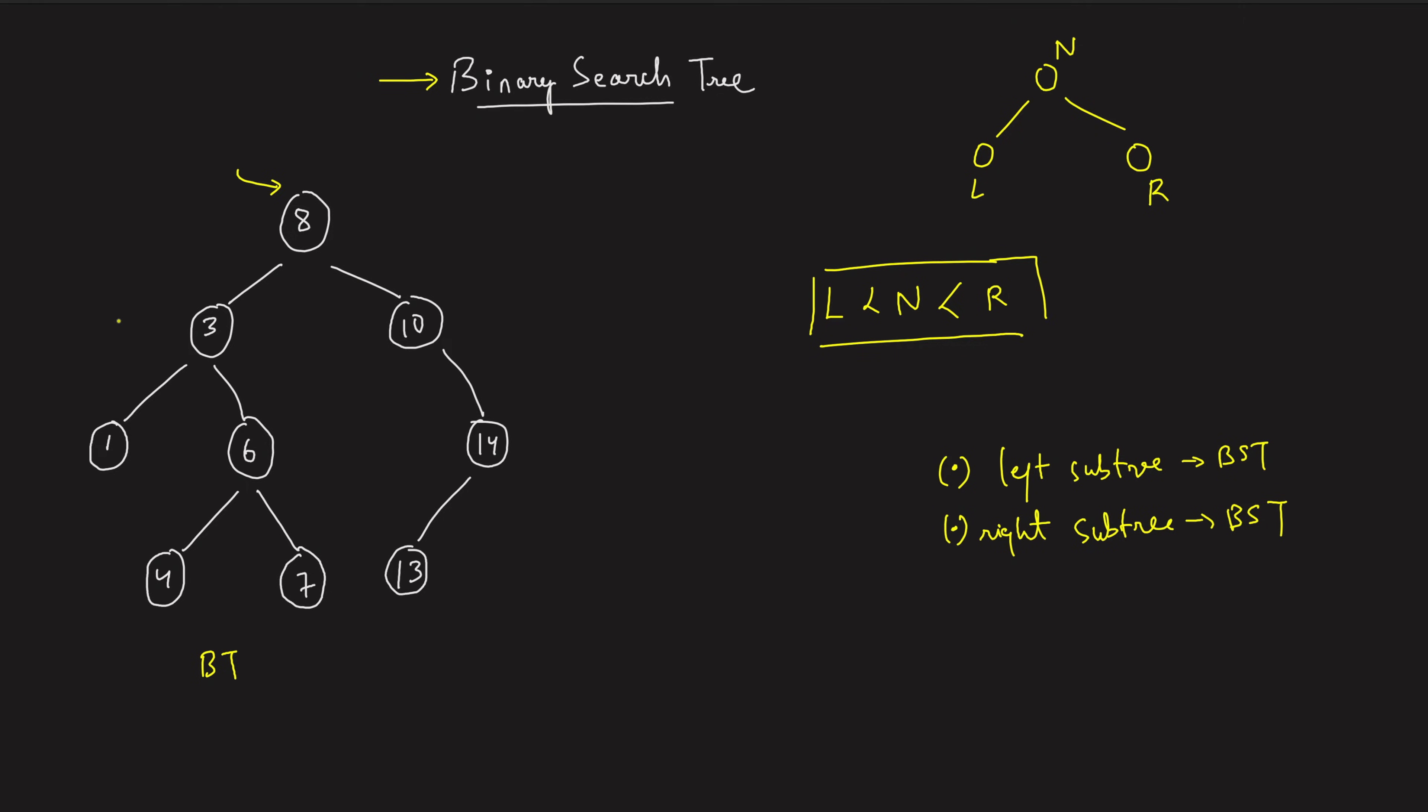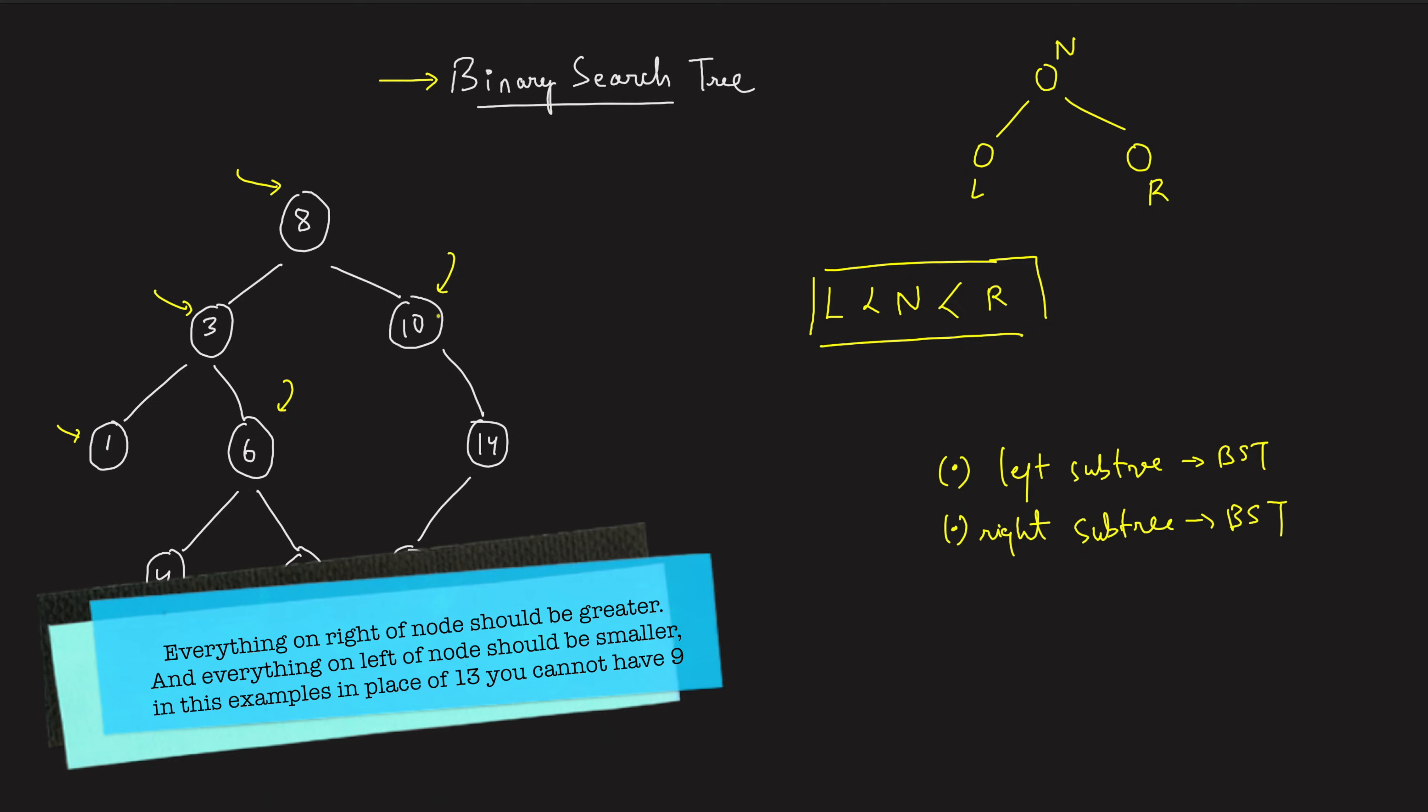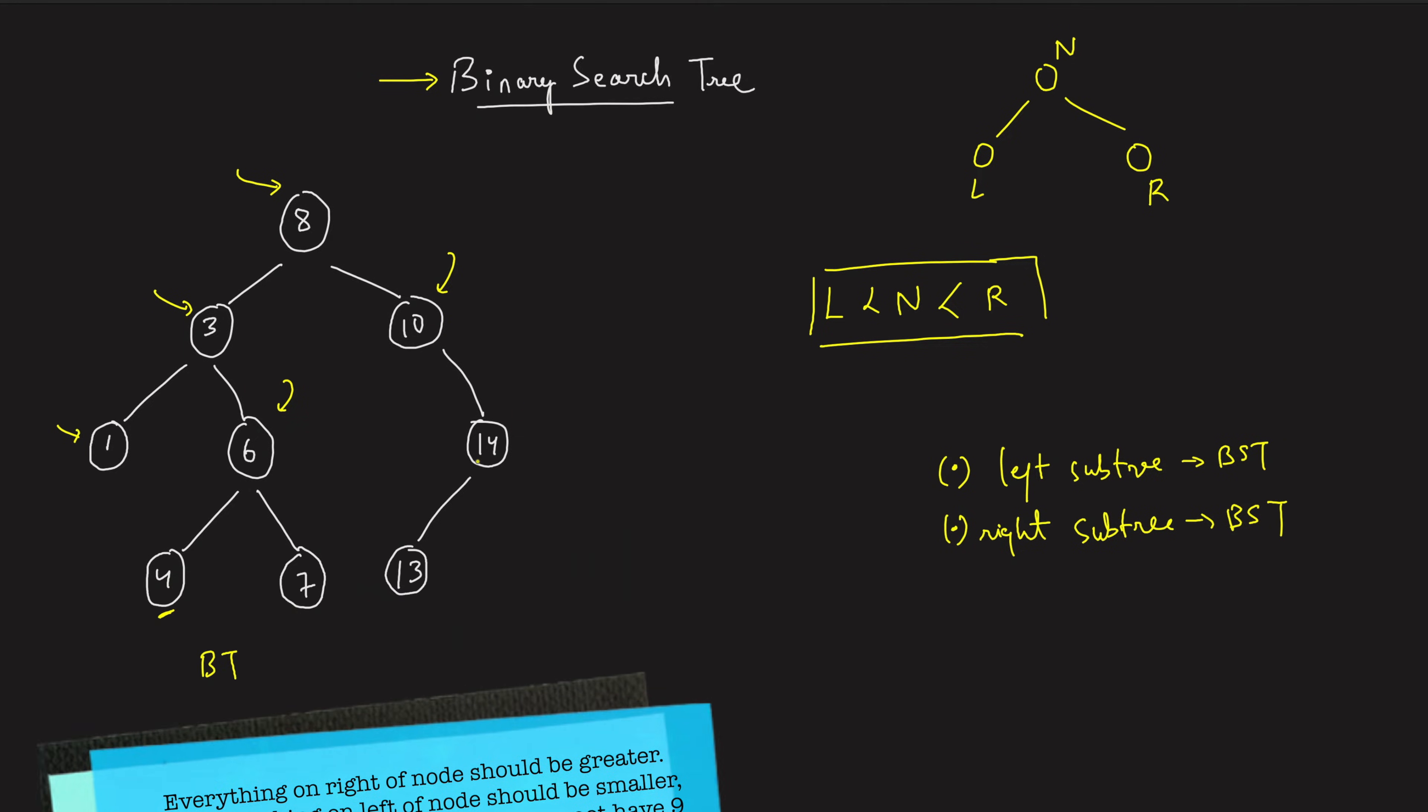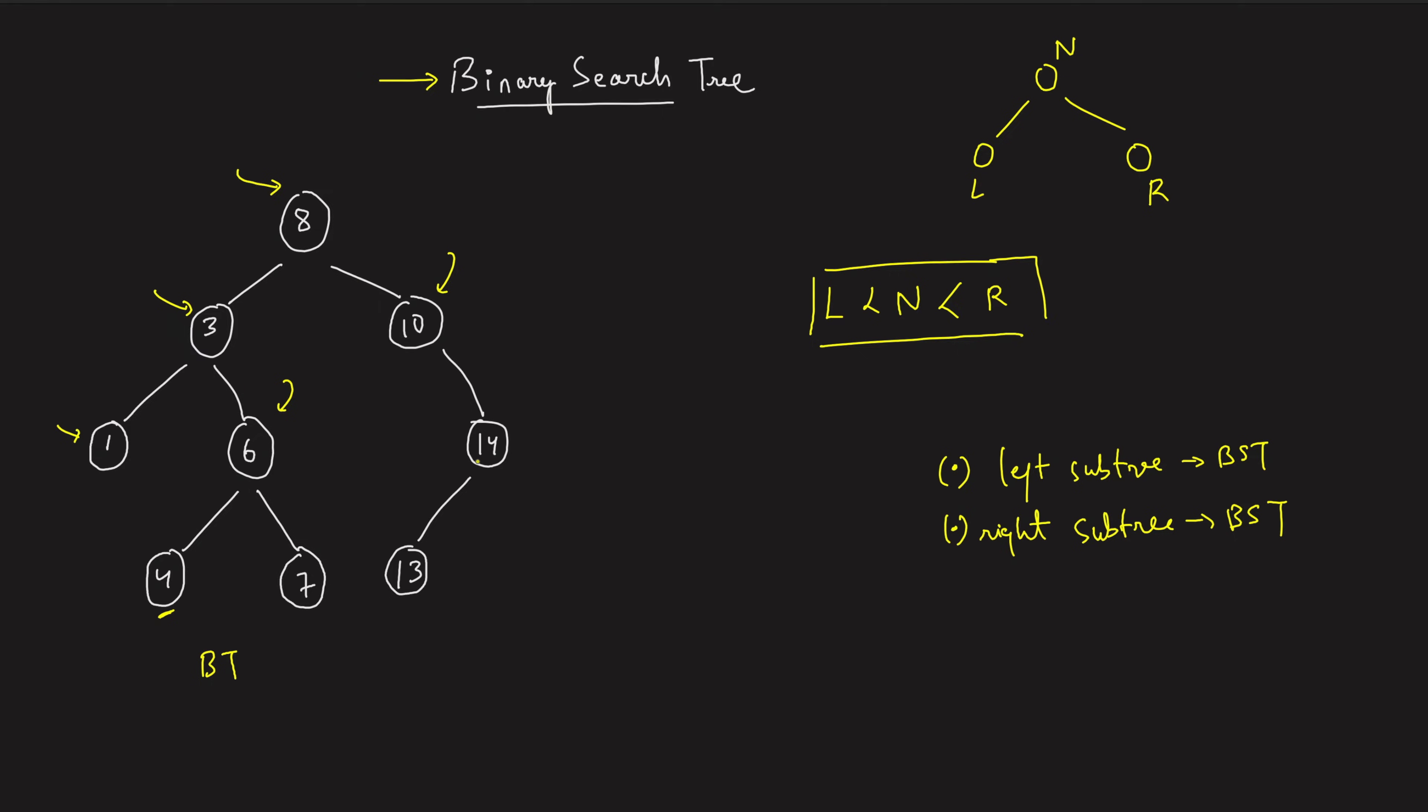So as you can see, this is another subtree. So if I say this is the node, the left guy is 1, which is smaller than 3, the right guy is 6, which is greater than 3. Again, this is a subtree. So this 4 is smaller than 6, this 7 is greater than 6. Again, this entire thing is a subtree. So this is a 10, the 14 is greater than 10 and this 13 is smaller than 14.